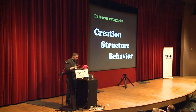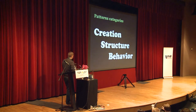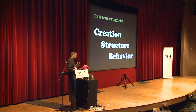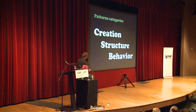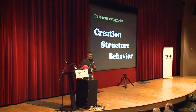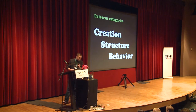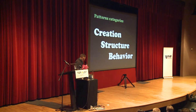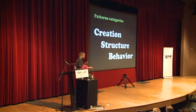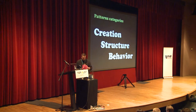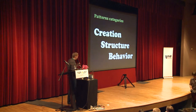In theory we have three different kinds of patterns, categorized into three categories. The creational patterns tell us how to create and initialize objects. Then we have structural patterns, which organize the code and classes together and show how components work together. And finally we have behavioral patterns, which explain how to make objects collaborate.